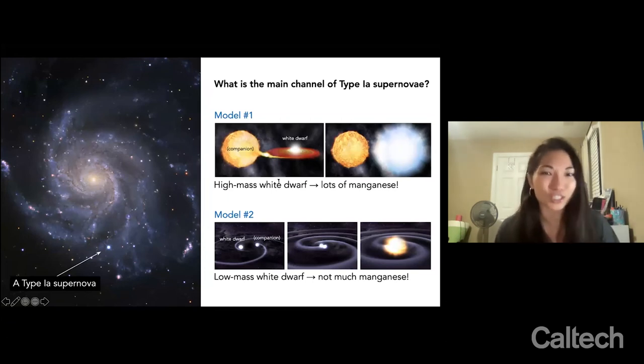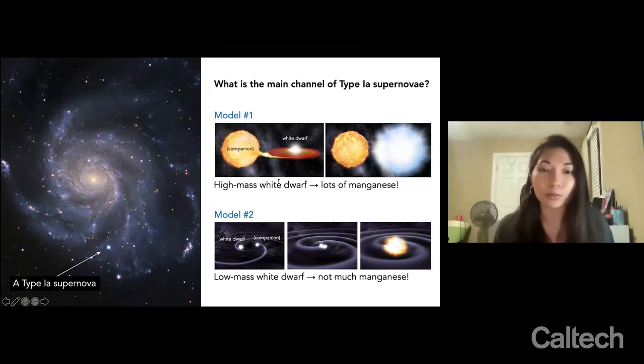And this is actually super different from the traditional picture of a Type Ia supernovae, which said that the white dwarf had to be more than the mass of the sun to explode. So there's still so much more that we can learn about these supernovae and about stars and galaxies in general, just from the debris of stars that died billions of years ago.